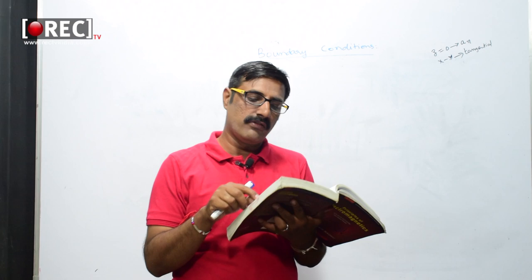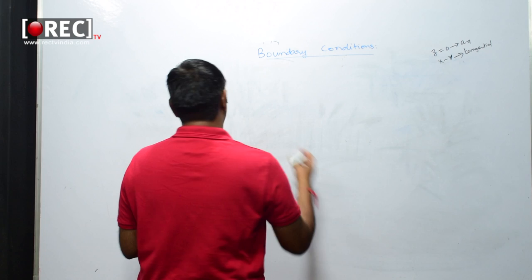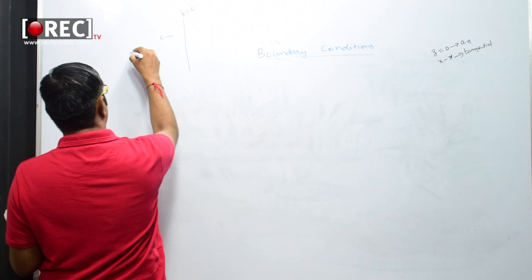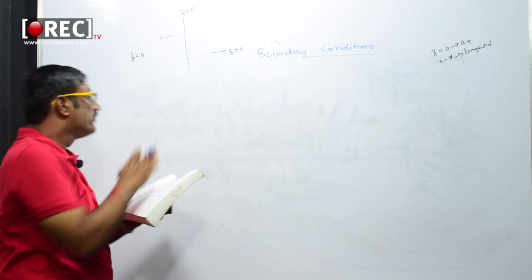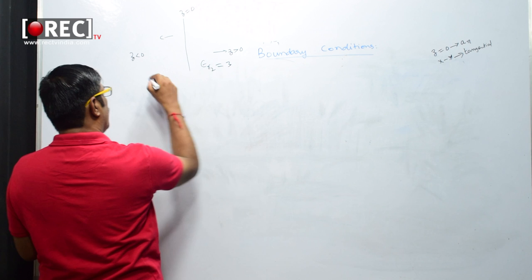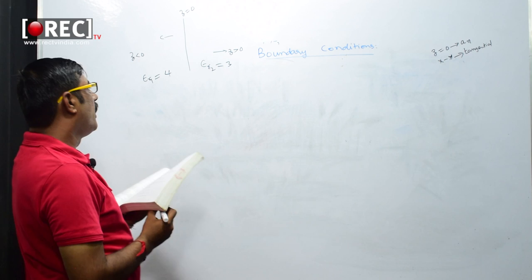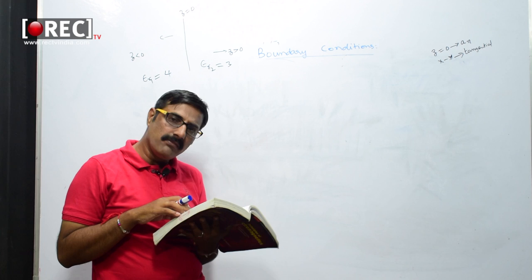For z greater than zero, epsilon_r1 equals 4, and for z less than zero, epsilon_r2 equals 3. So we have a boundary at z equals zero. On the side where z is less than zero, epsilon_r2 equals 3, and on the side where z is greater than zero, epsilon_r1 equals 4. These are the preliminary conditions given to us.